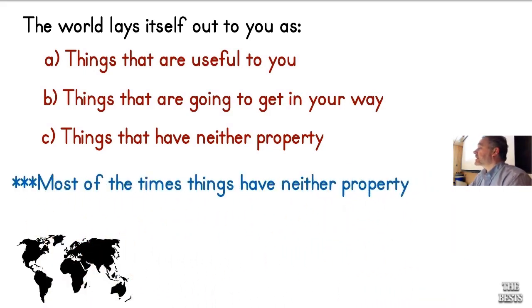Under most circumstances, the things that have neither property are the overwhelming majority. That's partly how you manage to process the world in all of its complexity with your relatively narrow processing capacity.